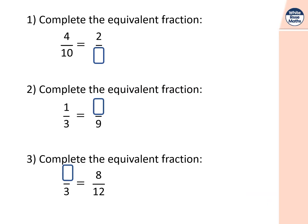This is the starter. Question one: complete the equivalent fraction — four tenths is two over what? Well, four divided by two is two. Whatever I do to the top I must do the same to the bottom. Ten divided by two is five. So whatever I do to the numerator I must do the same to the denominator. The numerator is the top part of the fraction, the denominator is the bottom part.